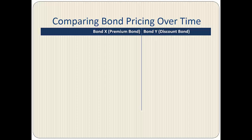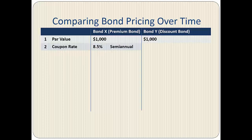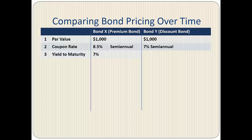Bond Y is a discount bond, meaning it's selling at a price below the par value. The par value for both bonds is one thousand dollars. Bond X has a coupon rate of 8.5% paid semi-annually, whereas Bond Y has a coupon rate of 7% also paid semi-annually. Bond X has a yield to maturity of 7%, meaning investors expect an issuer with a similar credit rating to pay 7%. Bond Y has a yield to maturity of 8.5%.